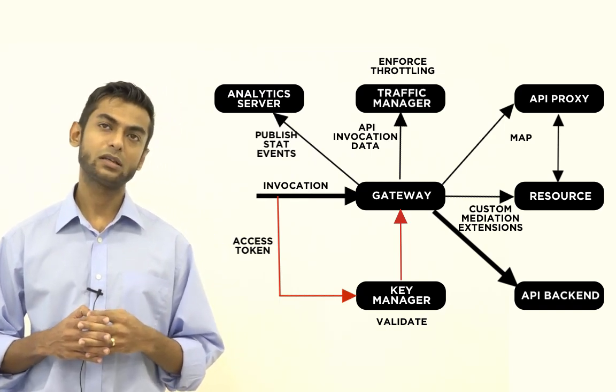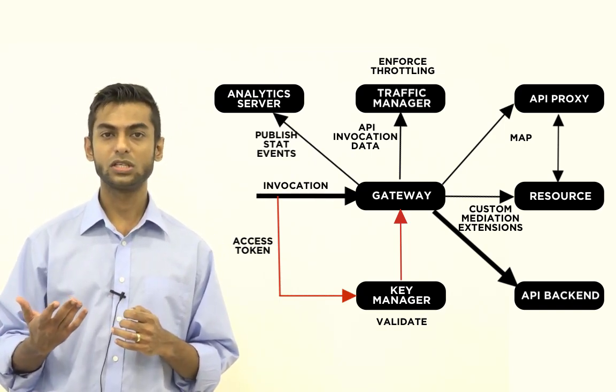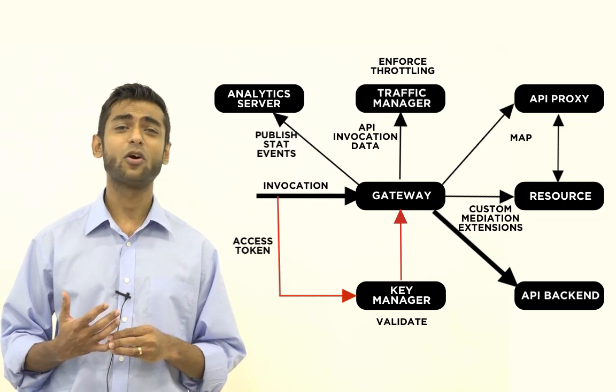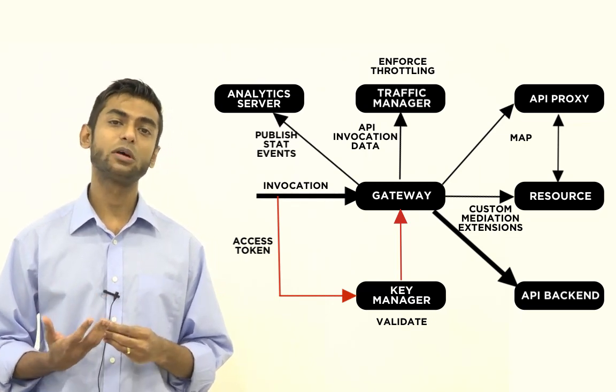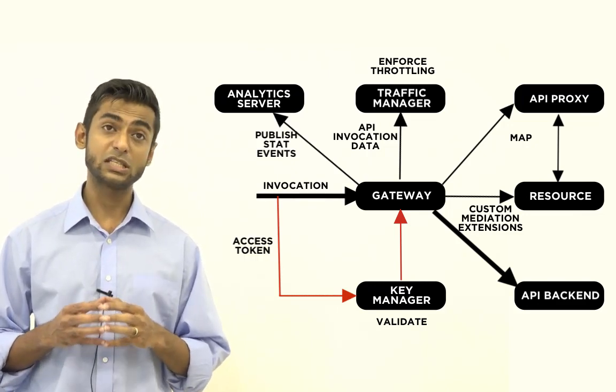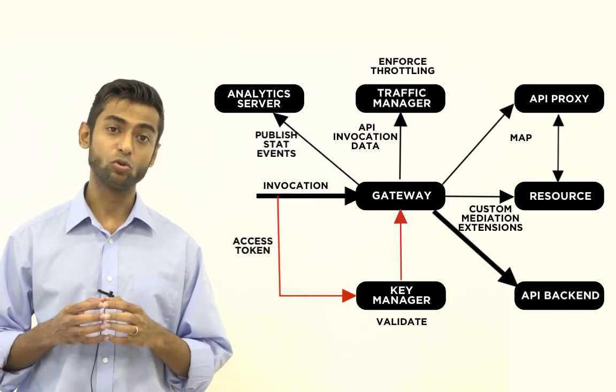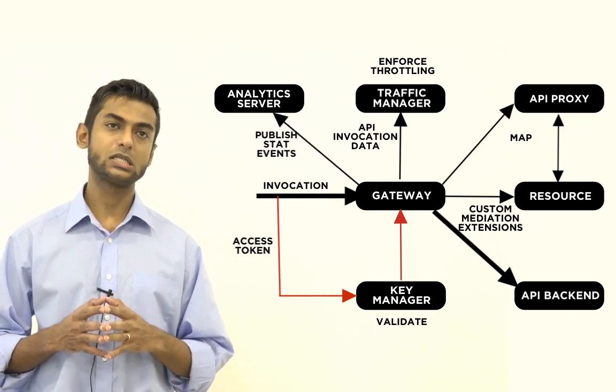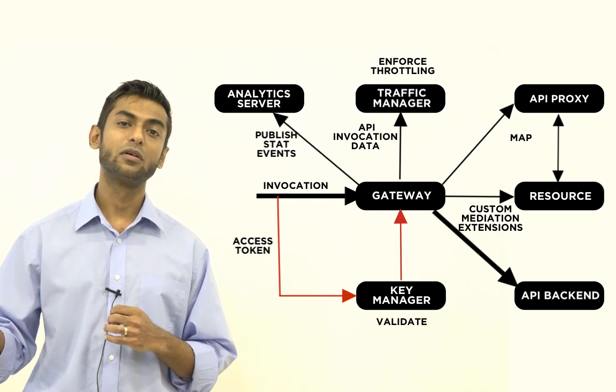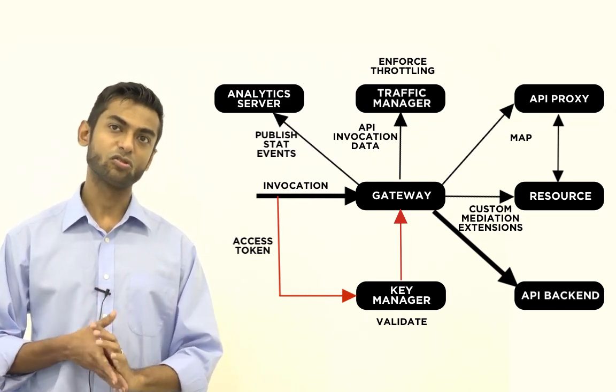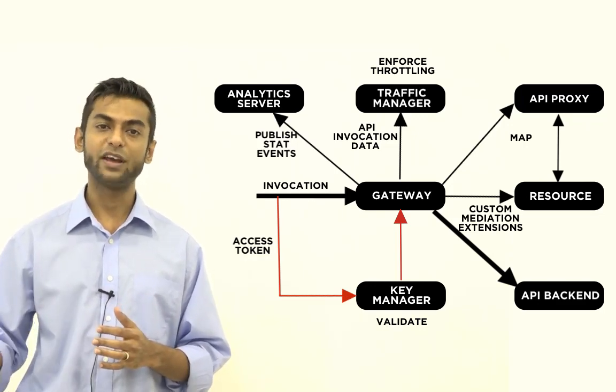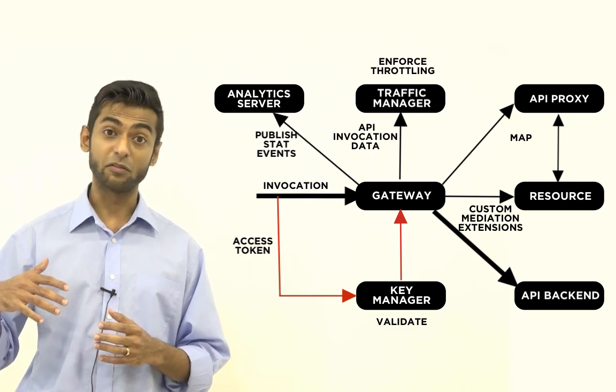So if you look at the next point, which is response caching, response caching is an optional performance improvement that you can choose to enable and it uses the ESB cache mediator to be implemented. And what it does is it will actually cache responses that are received for a given API resource. And so it will eliminate the need to constantly go to the backend to fetch responses. So this actually ends up reducing the load on your backend.